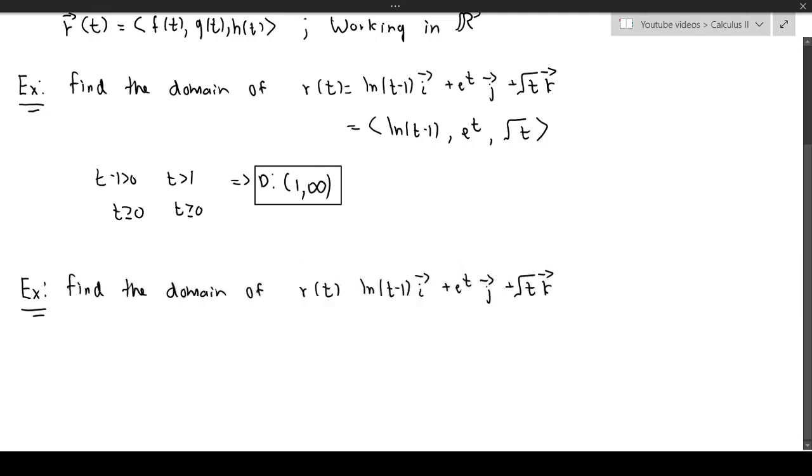So in this case r(t) is going to be given by the following. It's going to be cosine of t, ln of (4 minus t), and square root of (t plus 1).